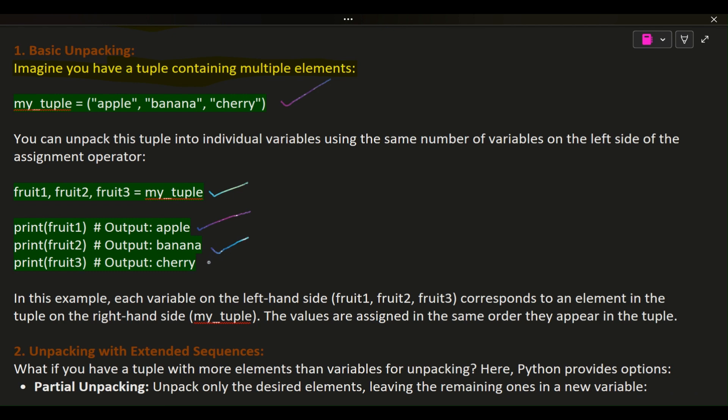In this example, each variable on the left-hand side (fruit1, fruit2, fruit3) corresponds to an element in the tuple on the right-hand side (my_tuple). The values are assigned in the same order they appear in the tuple.